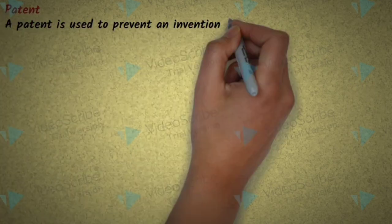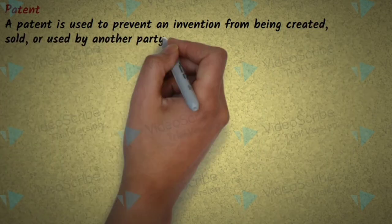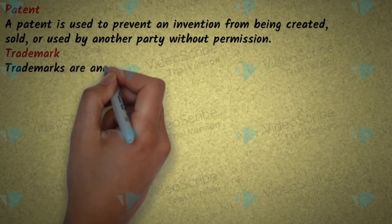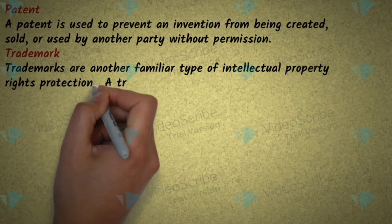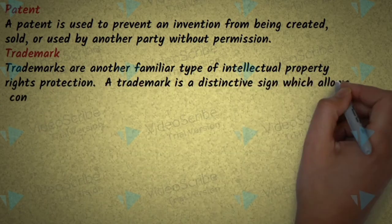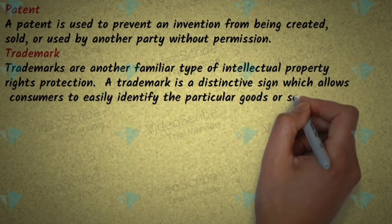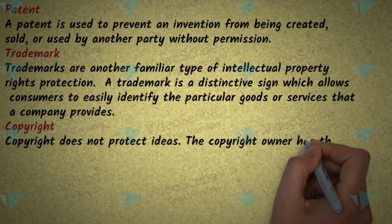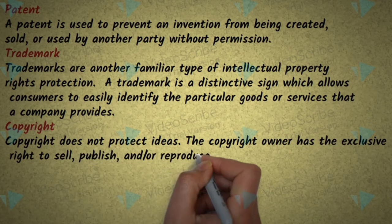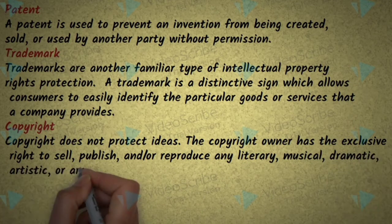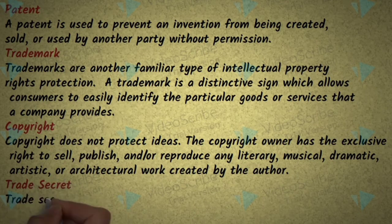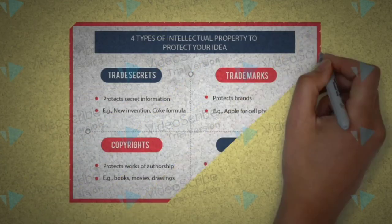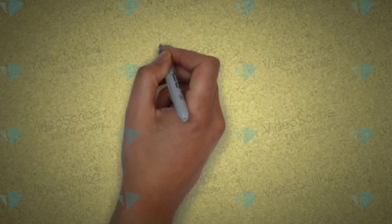Some types of intellectual property rights are: copyright, license, trademark, trade secret, and patent. A patent is used to prevent an invention from being created, sold, or used by another party without permission. Trademarks protect logos or codes used for identification of a particular brand. Copyrights protect ideas, and trade secrets are for business purposes — keeping the secrets of some invention or formula. These four — trade secrets, trademarks, copyrights, and patents — come under intellectual property rights.